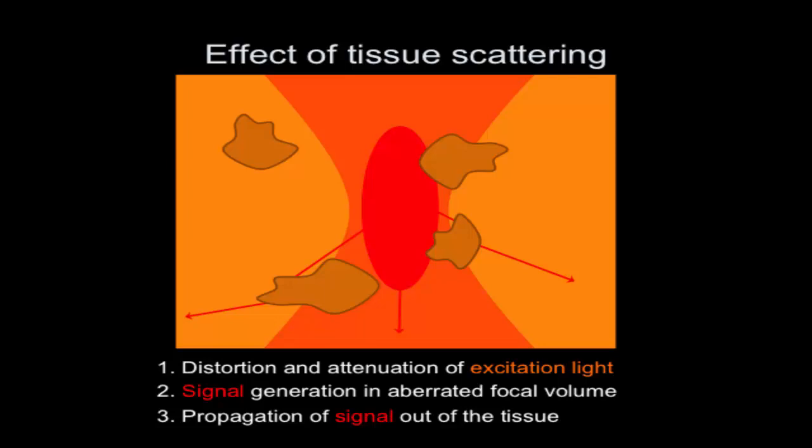Tissue scattering affects nonlinear optical microscopy and laser scanning microscopy in general in three ways: one, light going in is affected; two, because it's affected, the focal volume is larger and signal generation is different; and three, the light also has to come out. We have to take note of all those stages of how scattering affects our imaging capabilities.